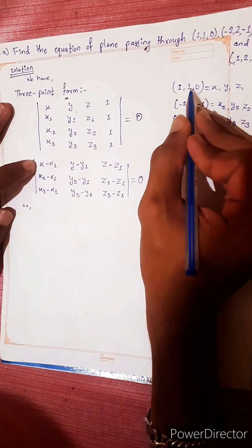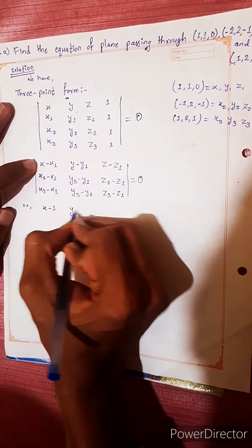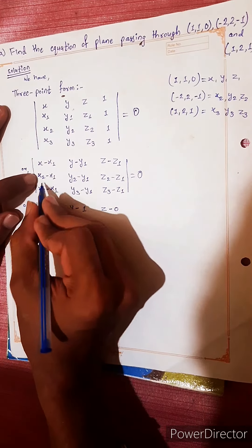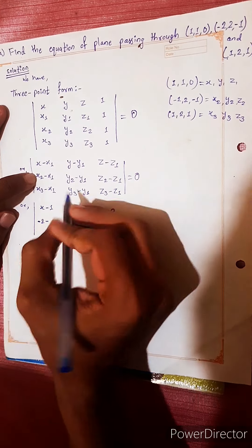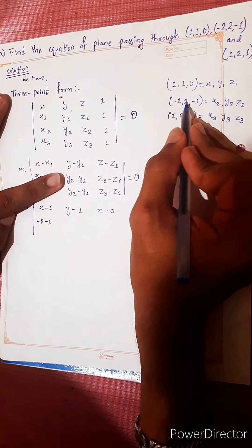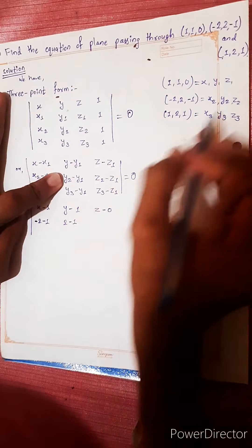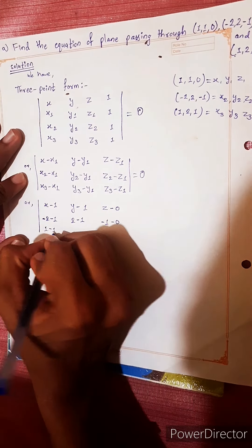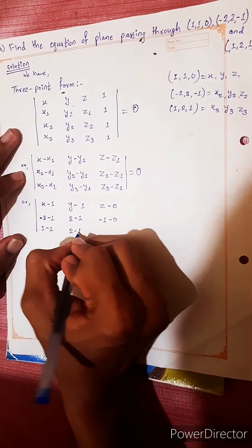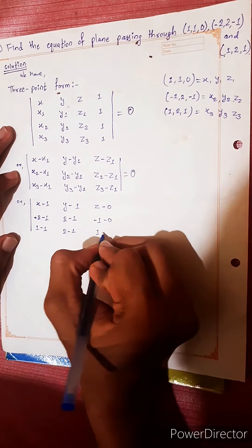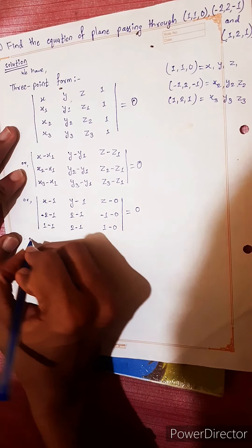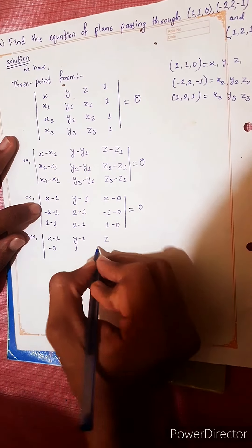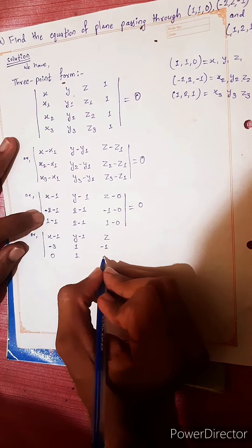Shifting to compute: X minus X1 gives the first row entries. The real equation uses X2 minus X1 = 2-1 = 1, Z2 minus Z1 = -1-0 = -1, X3 minus X1 = 2-1 = 1, Y3 minus Y1 = 1-1 = 0, Z3 minus Z1 = 1-0 = 1. So the determinant has rows (x-1, y-1, z), (1, 1, -1), (1, 0, 1) equals zero.